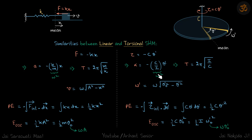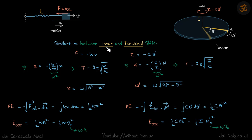We use the term omega-dash so we don't get confused: omega is the angular frequency of the SHM itself — a fixed quantity — whereas omega-dash is the angular velocity of the body, which changes with time. At the extreme, omega-dash will be zero; at the mean position, omega-dash assumes its maximum value. Omega is the angular frequency of the SHM, which is constant.